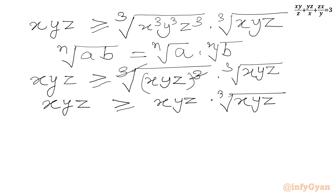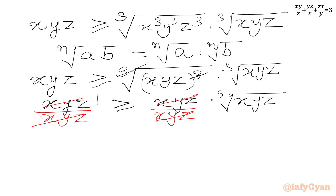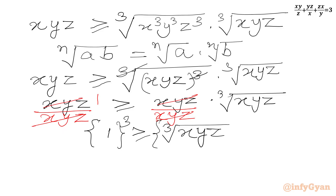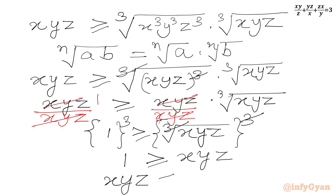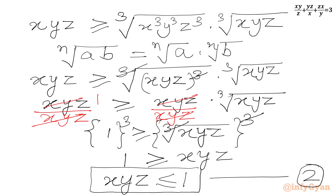Now since x, y, z are positive integers, they cannot be zero. So we divide both sides by xyz. Cancelling xyz from both sides, the LHS becomes 1. Therefore, 1 ≥ cube root of xyz. Cubing both sides, cube root and cube cancel on the RHS, giving us 1 ≥ xyz, or xyz ≤ 1. This is a very important result — let us call this inequality number 2.